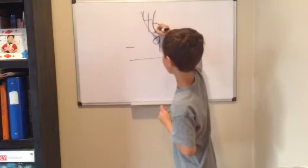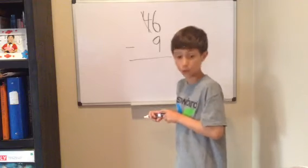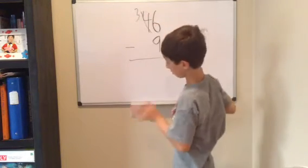So, we have to cross off the four, which really means 40, and change it to a three, which really means 30.